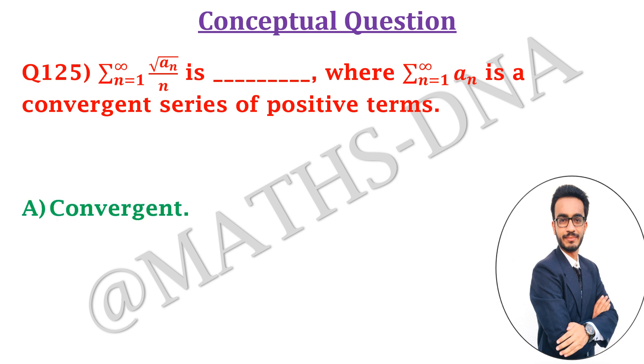The options are: a) convergent, b) divergent, c) oscillatory, or d) none of the above. I would recommend you to pause the video over here and first try this question by yourself.